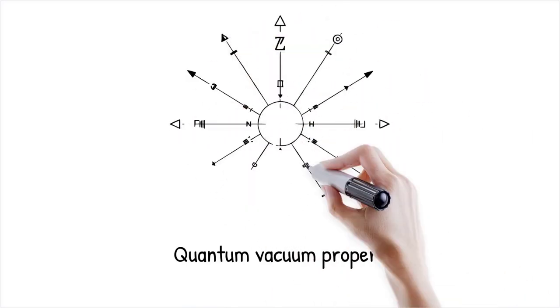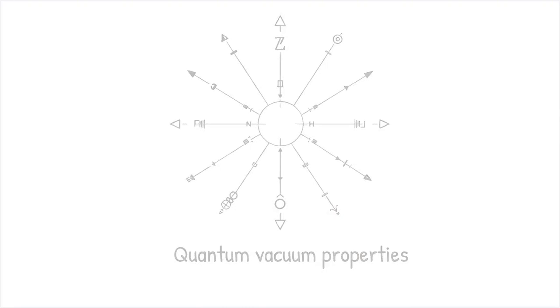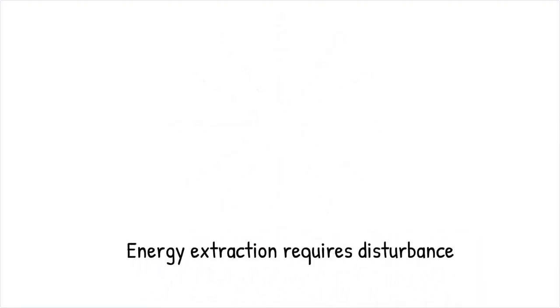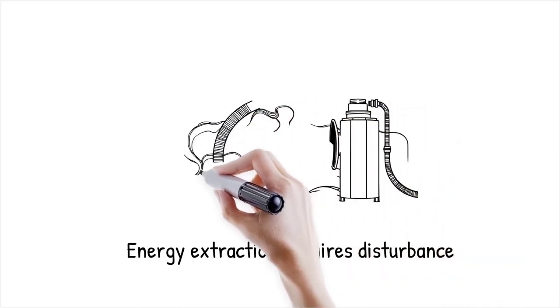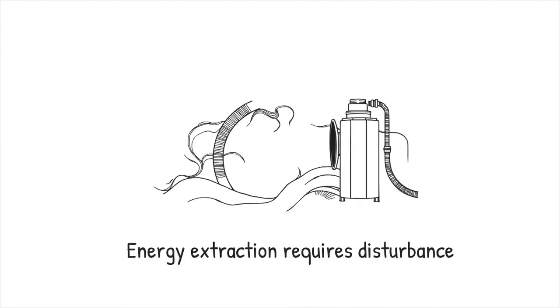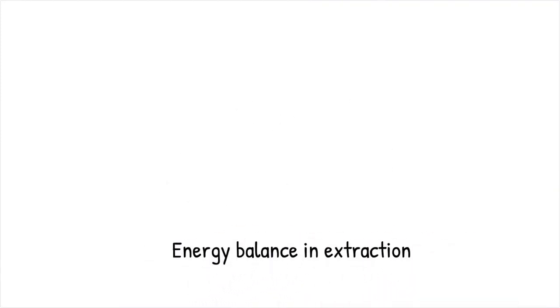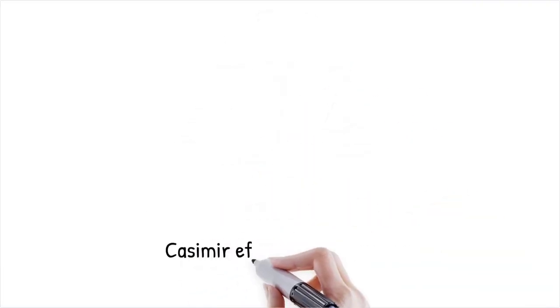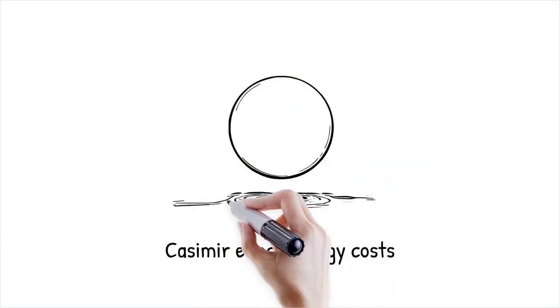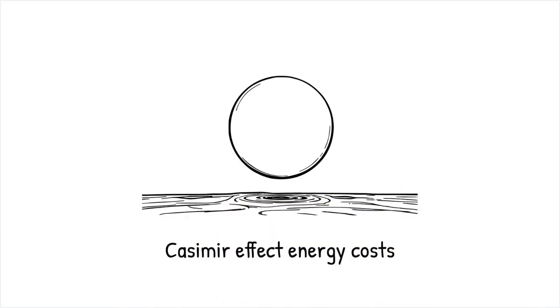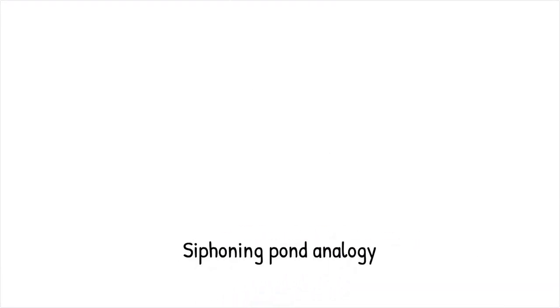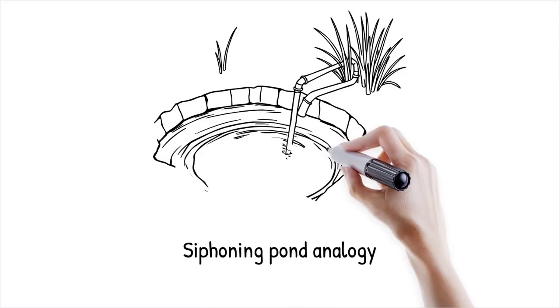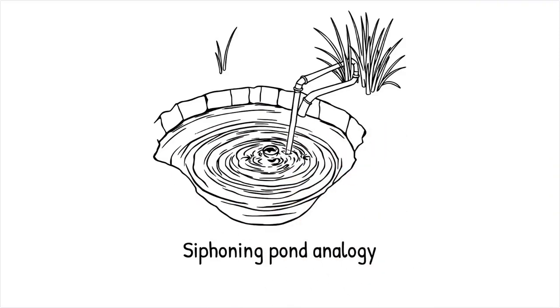The quantum vacuum is a Lorentz invariant and homogeneous state, meaning its properties do not change from one point to another. This uniformity implies that any mechanism aiming to extract energy must impose an external asymmetry or disturbance, which inevitably requires additional energy. The extraction effort is thus counterbalanced by the work performed to create the necessary conditions for extraction. Proposals for extracting vacuum energy by altering boundary conditions, as in the modified Casimir effect, always entail compensatory energy expenditures to reconfigure the system's geometry or dynamics. It is like trying to siphon water from a perfectly still pond. The act of installing a siphon disturbs the system and requires energy to set up, ultimately negating any free gain.